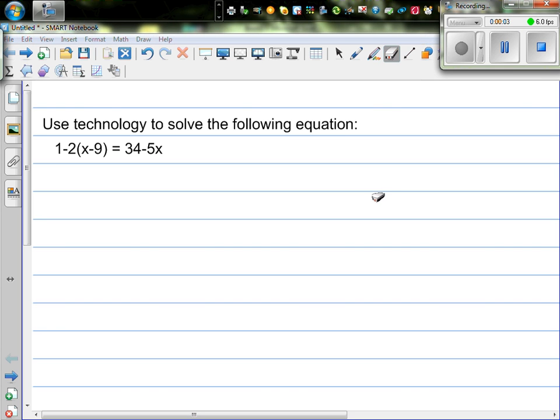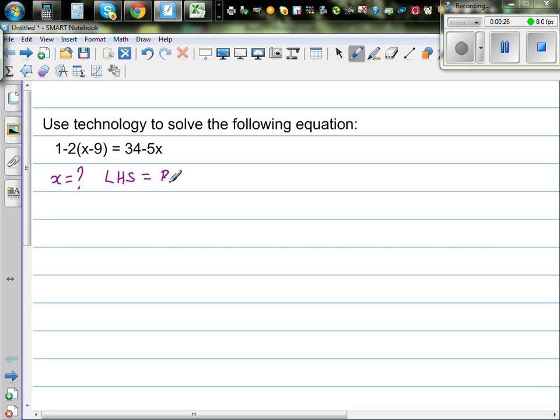Use technology to solve the following equation: 1 minus 2 times x minus 9 equals 34 minus 5x. So let us understand what this equation is. There is some value of x for which your left hand side is going to be equal to right hand side. So let us start.